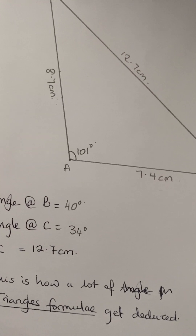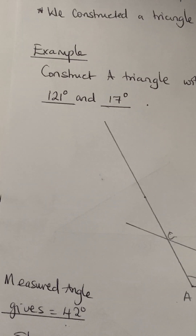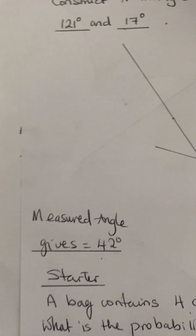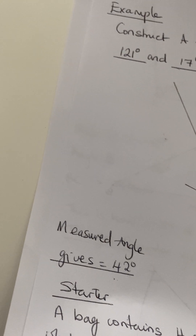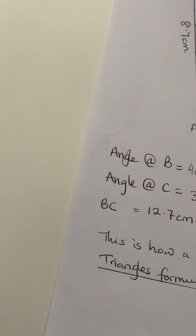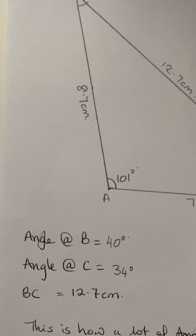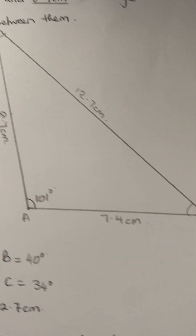So that's what we've basically done today. We did a recap of what we did yesterday — giving two angles and a side — then we looked at a probability starter, and today we looked at constructing a triangle with two sides and one angle. Thank you so much for watching today's video and I'll see you in the next one.